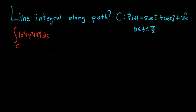Hey, what's up YouTube? In this video, we're going to find a line integral along a path. The path is given by this vector-valued function here. r of t equals sine t i hat plus cosine t j hat plus 2k hat, as t runs from 0 to pi over 2.